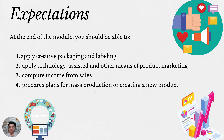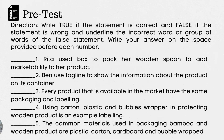Before we go on to the lesson proper, please answer the pre-test. Direction: Write True if the statement is correct and False if the statement is wrong, and underline the incorrect word or group of words of the false statement. Write your answer on the space provided before each number. Please get your TLE6 notebook and write your answers there. If you still need more time to answer this slide, just pause this video and once you are done, just continue watching it.